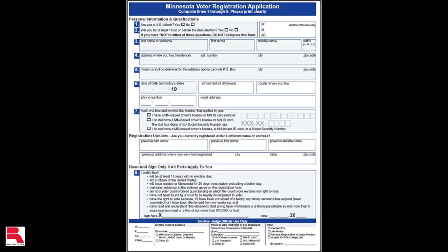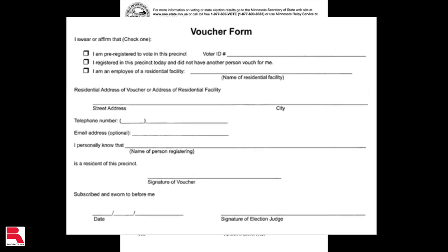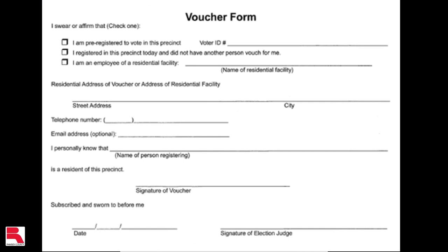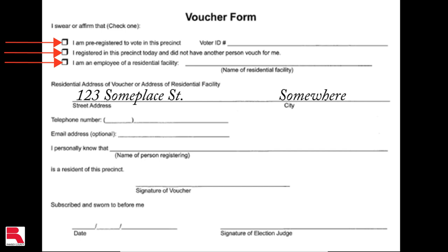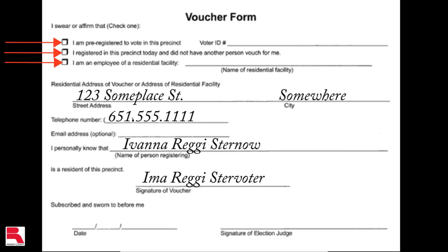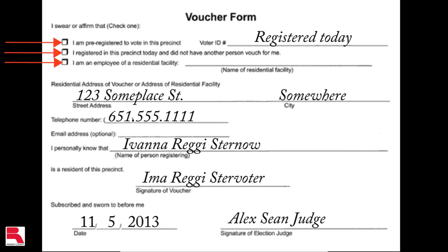On the reverse side of the application is the voucher form. This must be completed if the voter is using a voucher as Election Day registration documentation. The individual who vouches for a voter must complete the following: check if he is pre-registered, registered today, or an employee of a residential facility; provide his residential address, telephone number, the voter's name, and his signature. The election judge then writes in the voter ID number of the voucher. If the voucher registered that day, write in 'registered today.' Finally, the election judge signs and dates the form.